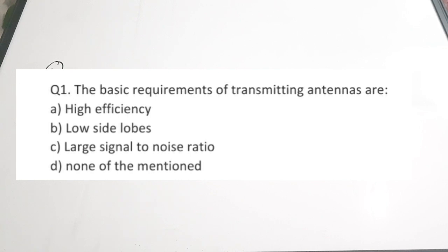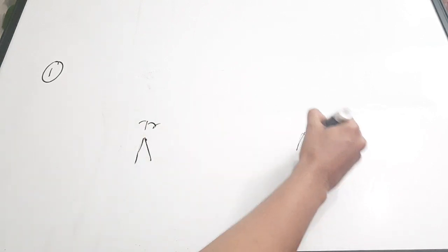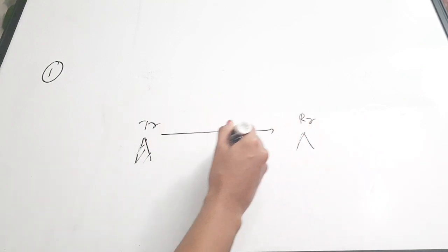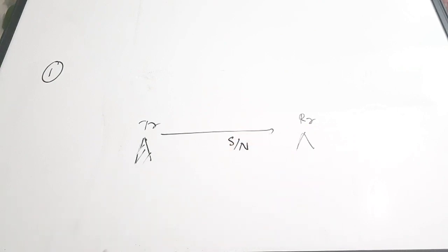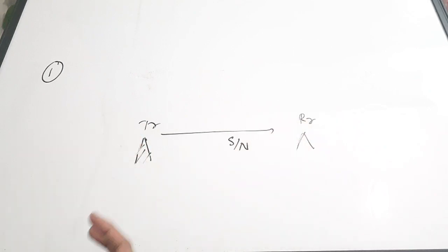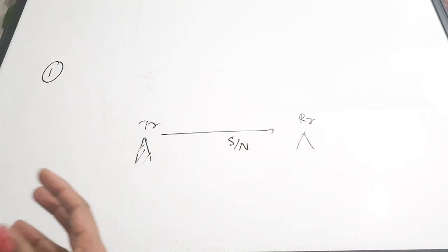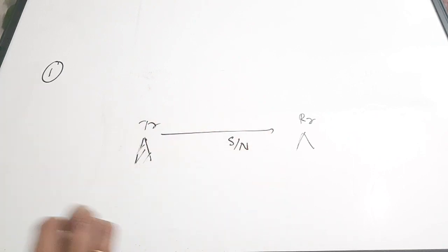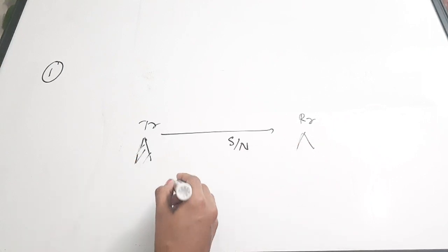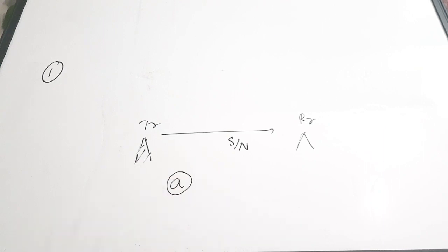Whereas for a receiving type of antenna, it should have a high signal to noise ratio. The transmitting antenna should have high efficiency, and the receiving antenna should receive the signal with high SNR or signal to noise ratio. The signal transmits through the atmosphere where there is a lot of noise, so it should be able to recover the signal with a high signal to noise ratio. The correct answer is A — high efficiency.